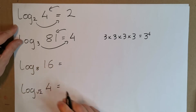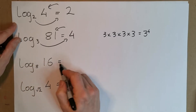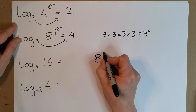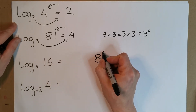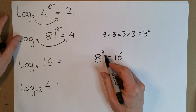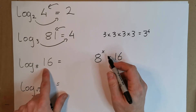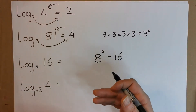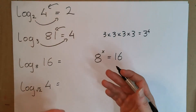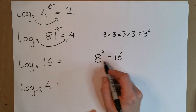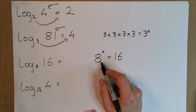Now let's look at a slightly more obscure one. 8 to the power of something gives you 16 — what could that possibly be? There's no obvious whole number answer. The reason I'm showing you this is because when these get algebraic with x's and y's, you need to figure things out. But I do think of a number related to both of these numbers, and that's the number 2.